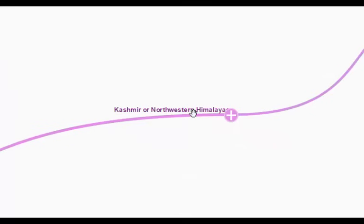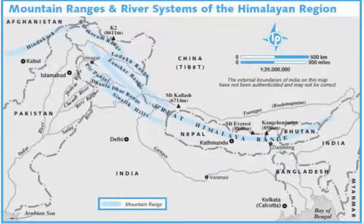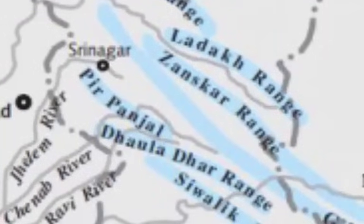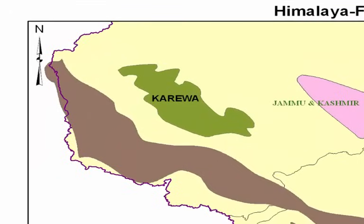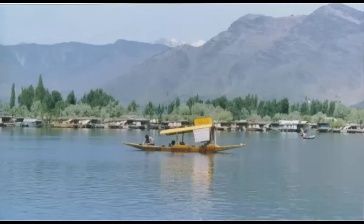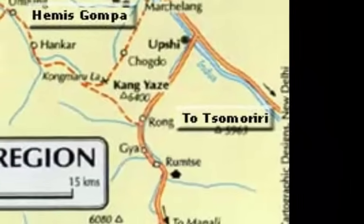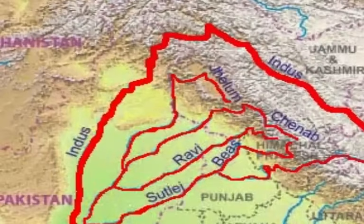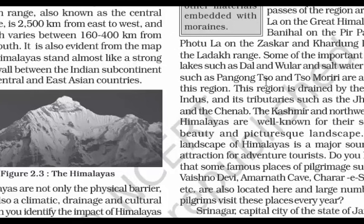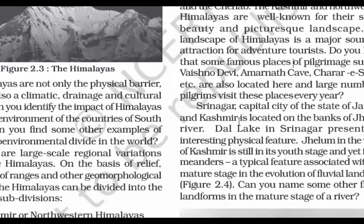Kashmir Himalayas have a few ranges and a cold desert. The ranges are the Karakoram range, Zaskar range, and Pirpanjal, while the cold desert is Ladakh. Kashmir Himalayas are also famous for Karewa formation, which is useful for the cultivation of Zafran, a local variety of saffron. Important freshwater lakes include Dal Lake and Wular Lake, and saltwater lakes include Pangkong Tso and Tso Moriri. The Kashmir region is drained by the river Indus and its tributaries Jhelum and Chenab. The region is well known for its scenic beauty, picturesque landscape, and places of pilgrimage such as Vaishno Devi and Amarnath cave.